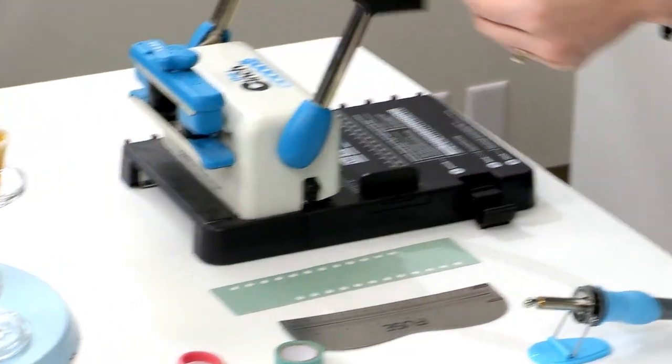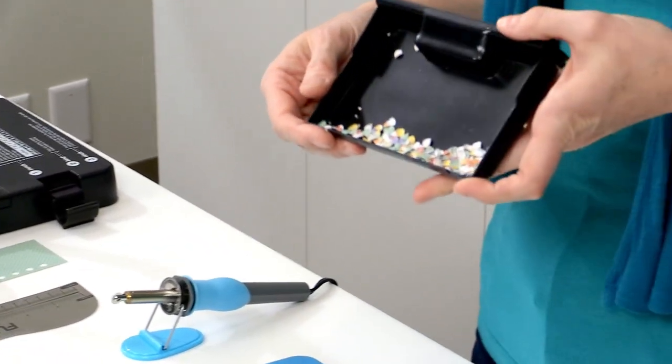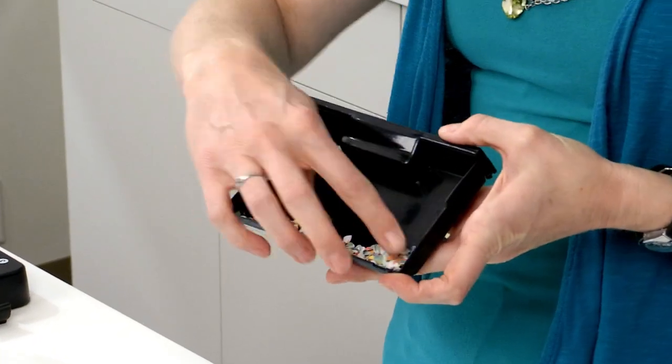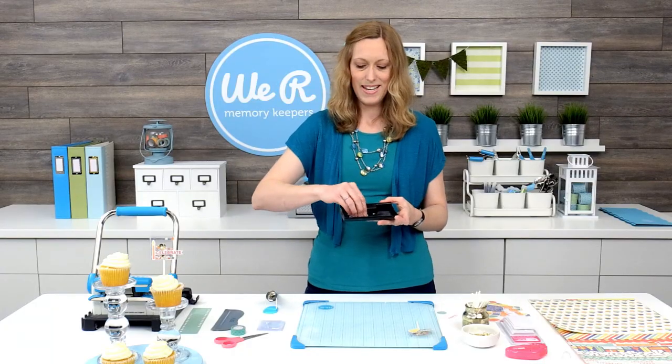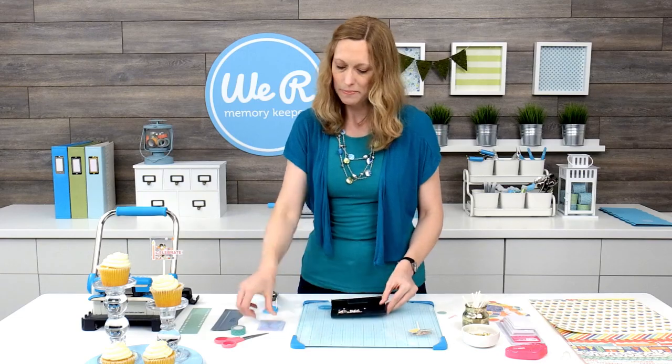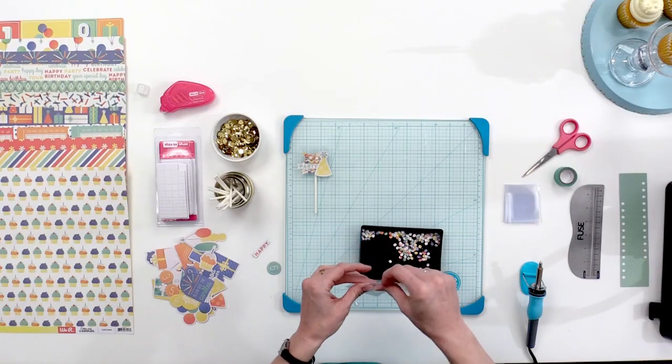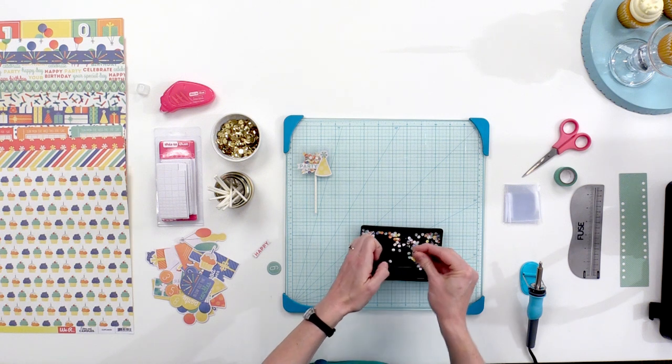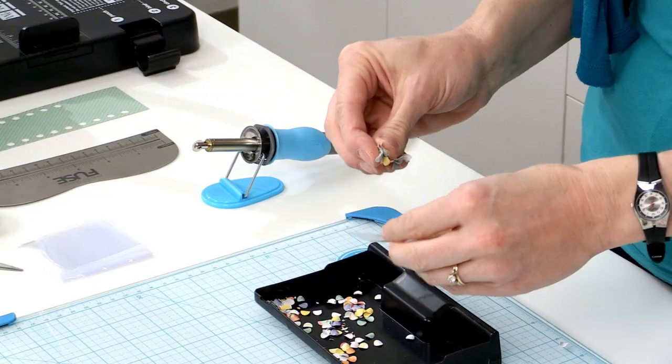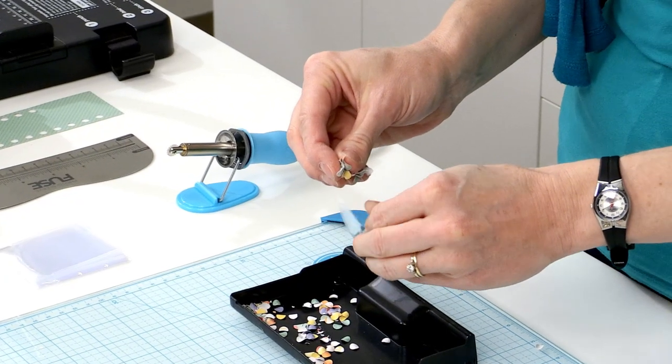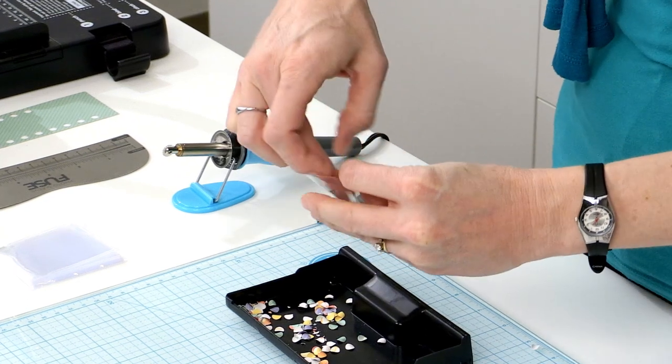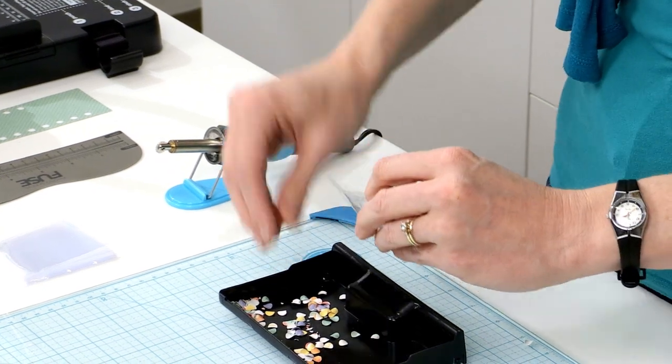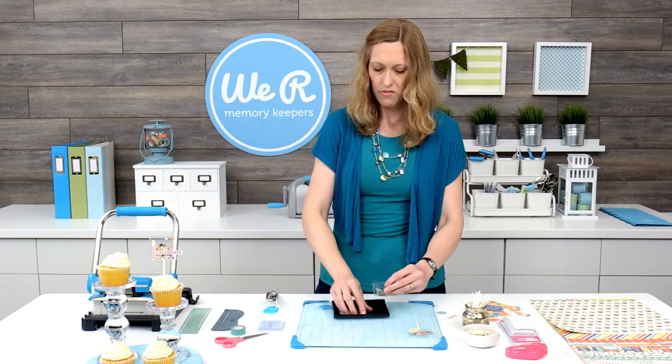Then you're going to pull out your handy tray here, and you've got instant confetti. How fun is that? So, we're going to add this to our pocket, and this is perfect because it's just the right size. Not too big, not too small. So, we're going to fill it up.